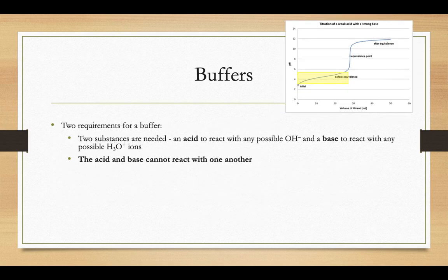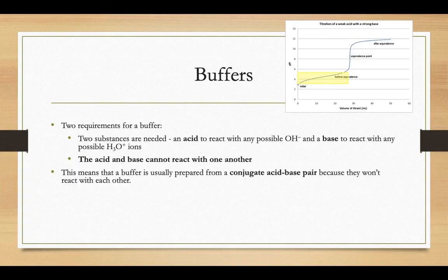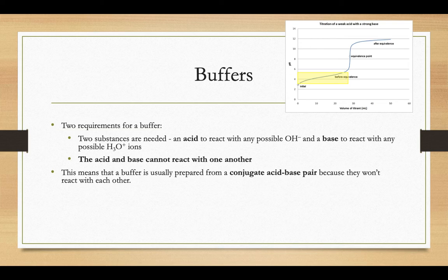There are two requirements to make a buffer. Your buffer needs to contain an acid and a base. The acid's job is to react with any possible hydroxide ions that might be added. The base's job is to react with any possible hydronium ions. One of the catches is that the acid and the base cannot react with one another. So what that means is that usually a buffer is prepared from a conjugate acid base pair. They don't react with one another.